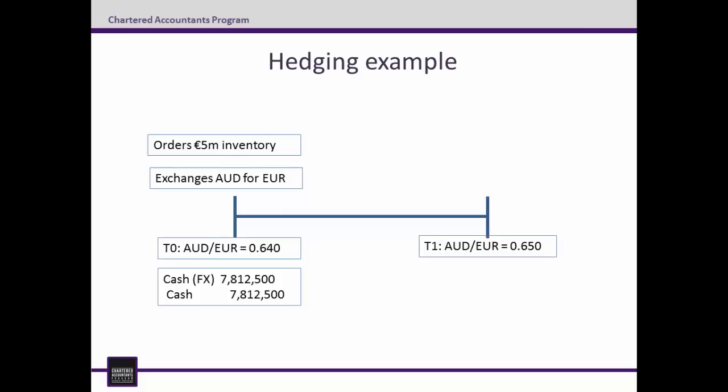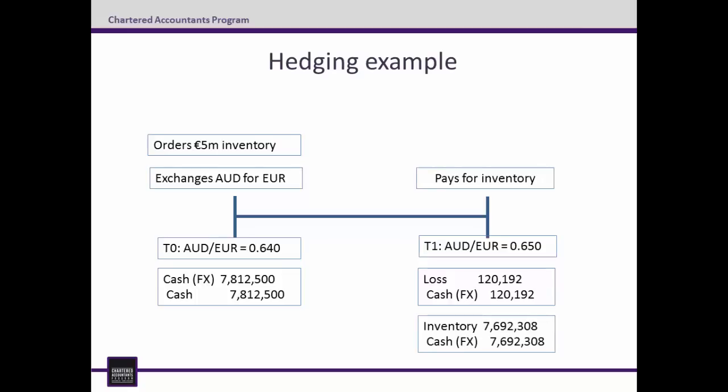At the time of the payment, the Aussie dollar has strengthened so that the Aussie dollar-euro rate is 0.65. This means the 5 million euro amount is equivalent to $7,692,308. As such, a loss is recognised on the foreign exchange cash holding as per AASB 121. The entry for this is: Debit Loss in the P&L $120,192 and Credit Cash Foreign Exchange $120,192. The goods, while still costing 5 million euro, are now only worth the equivalent of $7,692,308. So the entry is: Debit Inventory $7,692,308 and Credit Cash Foreign Exchange $7,692,308.